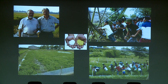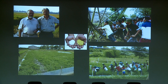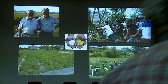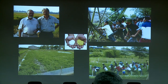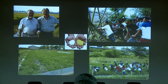Golden rice continues to be controversial, and vitamin A deficiency continues to be responsible for more than 2 million preventable deaths annually, largely of women and children in poor countries. The good news is that after decades of delay, golden rice has been approved in several countries — Australia, Canada, and the U.S. — which largely don't need it, but it is inching closer to approval in Bangladesh where it is needed.